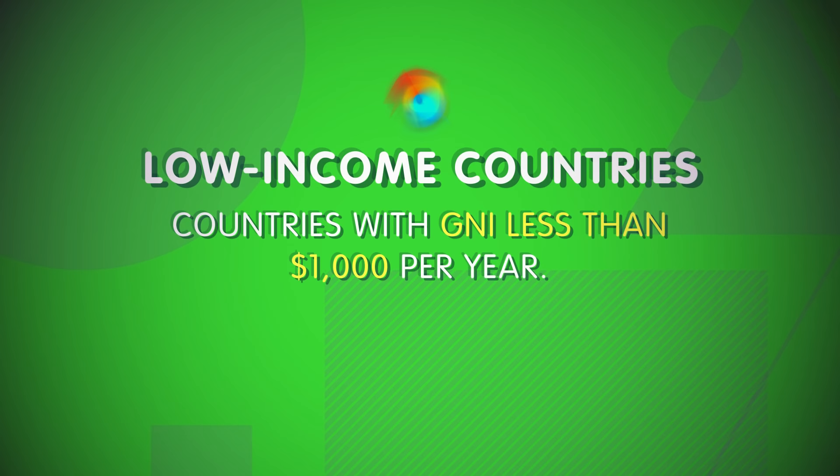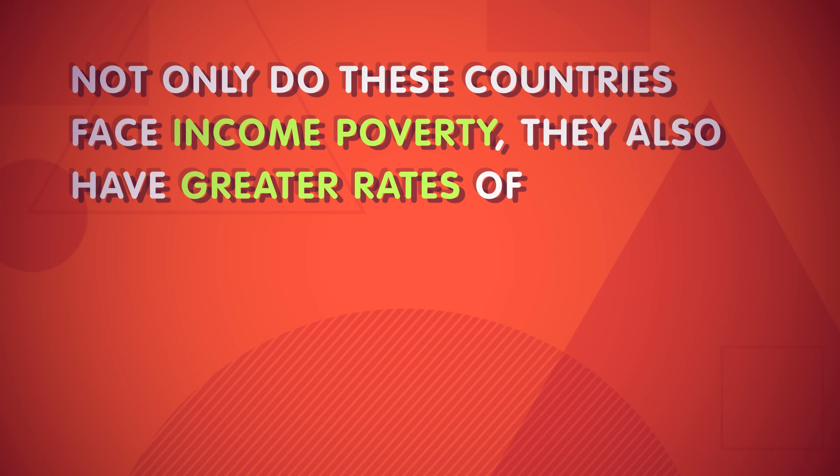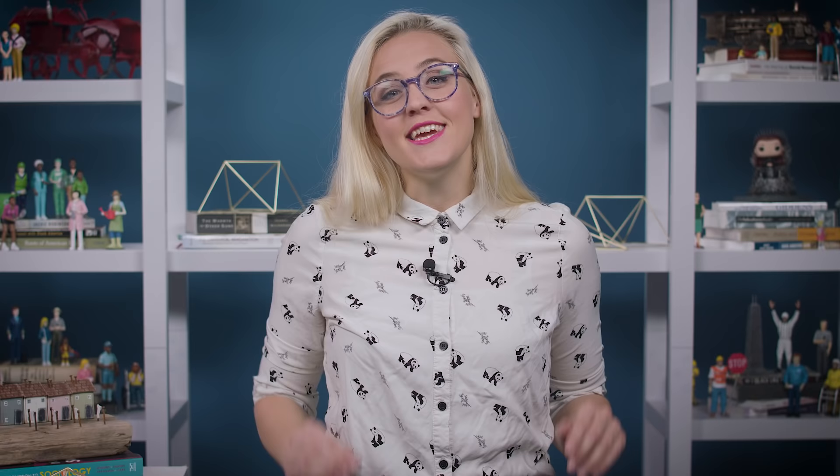In lower-middle-income countries, access to services like quality healthcare and education is limited to those who are well-off. The maternal mortality rate is five times higher than in upper-middle-income countries, and one-third of children under the age of five are malnourished. Our final grouping includes the 31 countries designated as low-income, with yearly GNI less than $1,000. These countries are primarily rural, with economies mainly based on agriculture. They face income poverty, greater rates of disease, worse healthcare and education, and many citizens lack access to basic needs like food and clean water. Here, 8% of children die before the age of five, and more than one-third of older children never finish primary school.